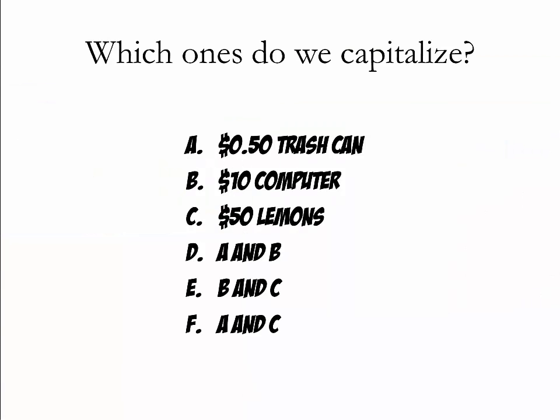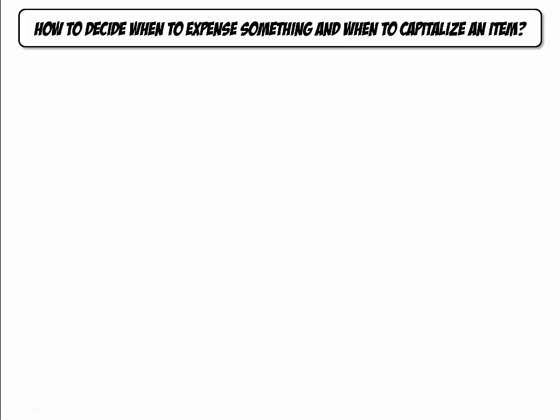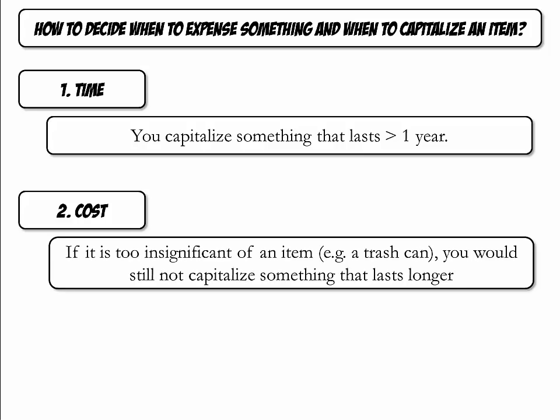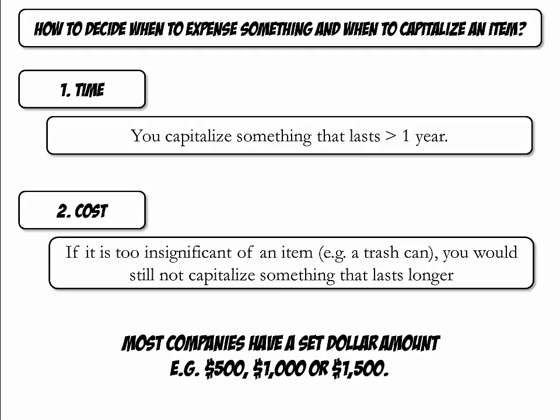It is important to understand when items are capitalized. Rather than expensing the item's purchase price, like the $2 paint, we depreciate the cost of the good over the years we expect to use it. When companies decide whether to expense or capitalize an item, they consider two rules: time — only capitalize items that last more than a year — and cost. Items like a trash can that last beyond one year but are too insignificant in cost would be expensed, not capitalized. Most companies have a set dollar amount below which they will not capitalize.